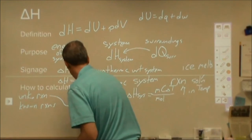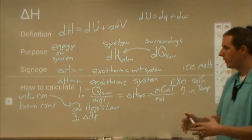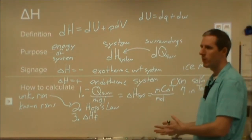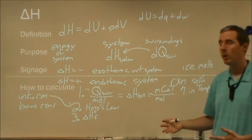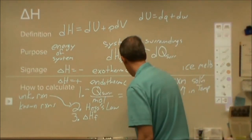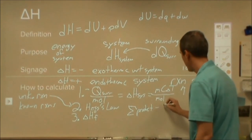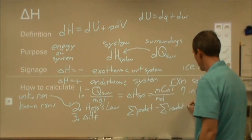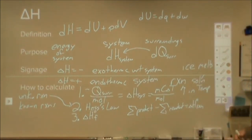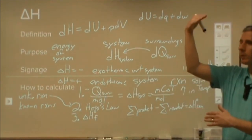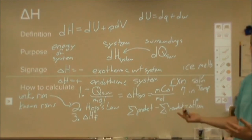The third method is a slight variation: using enthalpy of formation values. Enthalpy of formation is how much enthalpy change there is to convert elements in their standard state into a compound. These values have been experimentally determined by scientists and can be found in a table. You add up all of your product enthalpy of formation values, add up all of your reactant values, and the difference gives you the standard enthalpy of your reaction.